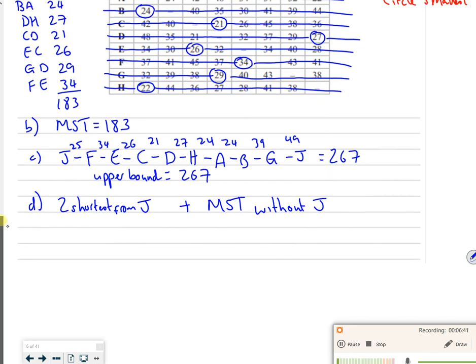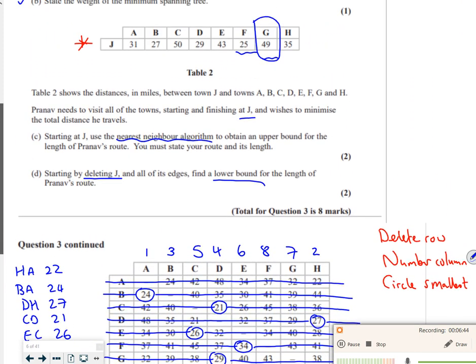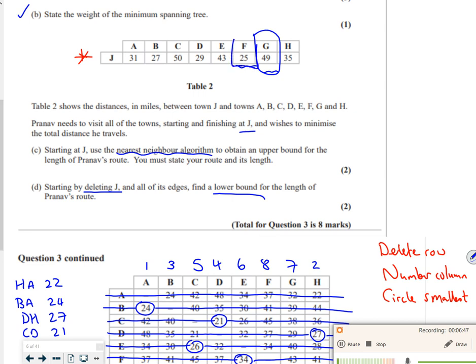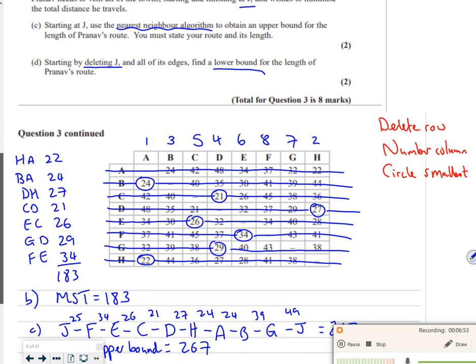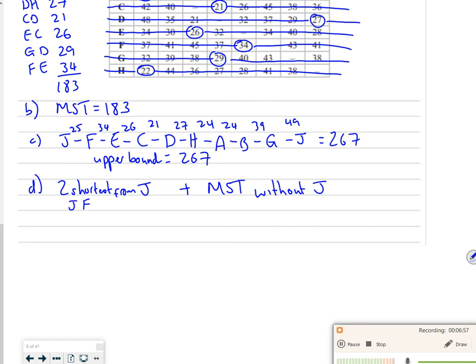So my two shortest from J are J to F and J to B. So I've got J to F which is 25. I've got J to B which is 27. And then I'm going to add on the minimum spanning tree without J, which is actually my part A answer. So my minimum spanning tree is 183. So then that tells me my lower bound is, if I add them together, it's 235, isn't it? It's 235.